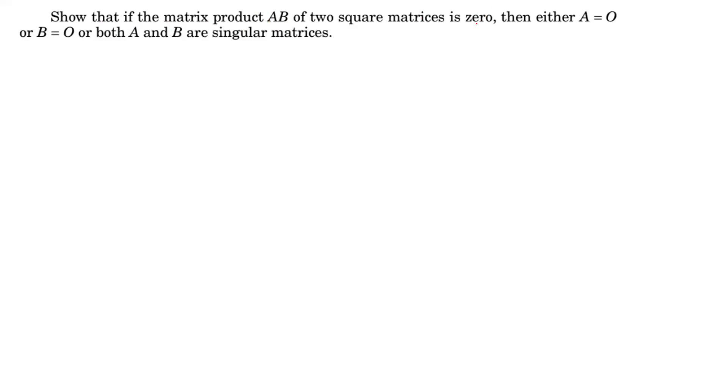Show that if the matrix product of A and B is 0, then either A is equal to 0, or B is equal to 0, or both A and B are singular matrices. We don't have any other cases.